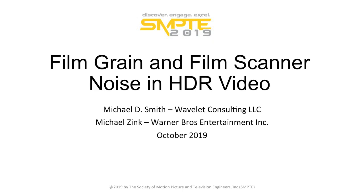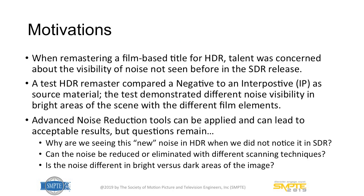This is about film grain. I worked with Mike Zink at Warner Brothers on this. The motivation for this work is that while remastering a film-based title for HDR, talent saw noise that they weren't familiar with — noise they never saw in SDR. A test of an HDR remaster from a film negative and a film inner positive resulted in different noise characteristics in the bright parts of the scene. Questions remain: why are we seeing this noise in HDR that we never saw in SDR? Can the noise be reduced or eliminated with different scanning techniques? And is the noise different in bright or dark areas?